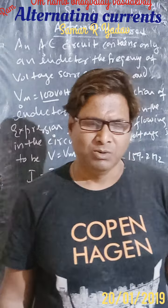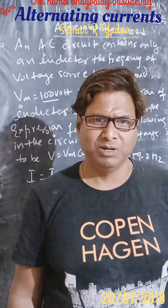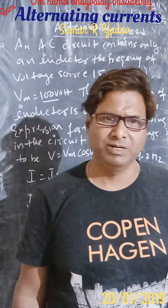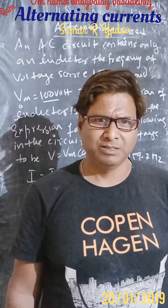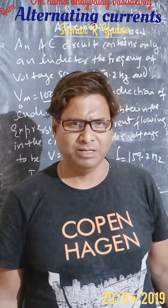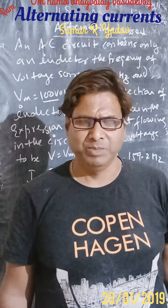Finally we can get Im equals Vm upon mod z equals 0.1. So now finally we can get the equation i equals Im cos omega t minus delta. Keeping all these values we can get i equals 0.1 cos 1000t minus π/2 Ampere.